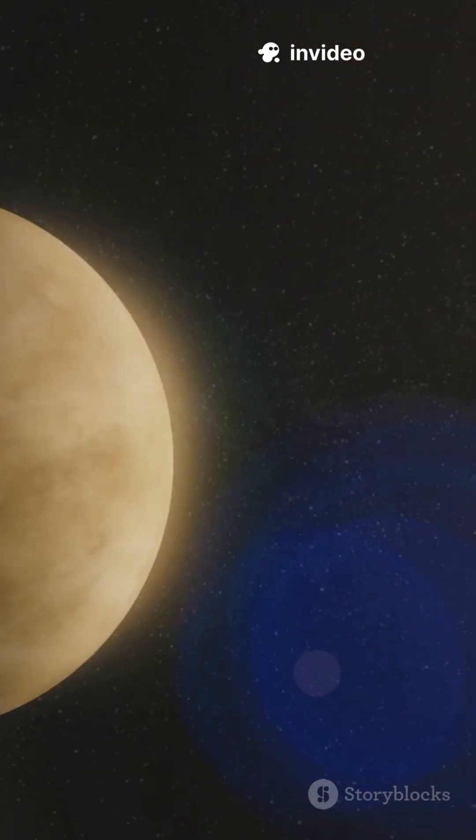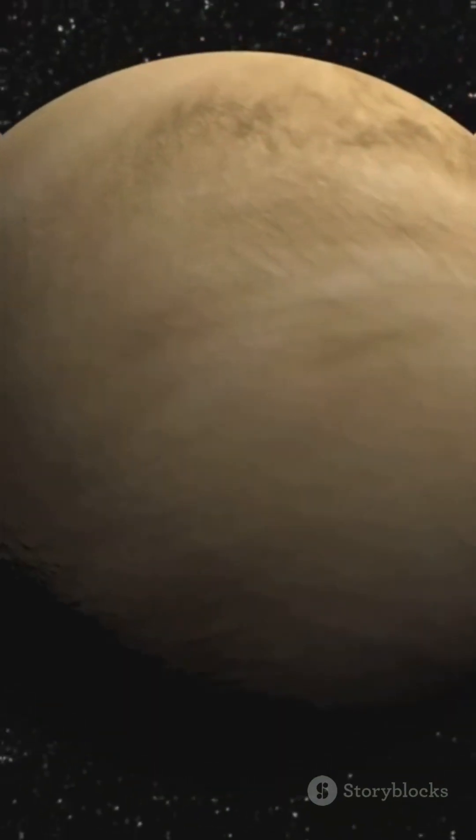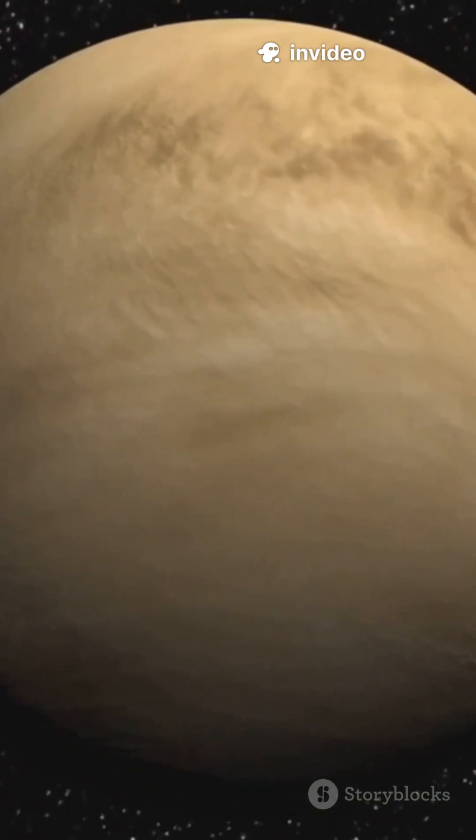But get this. It only takes 225 Earth days for Venus to go all the way around the Sun. So by the time Venus finishes one day, it's already completed a full year. And then some.